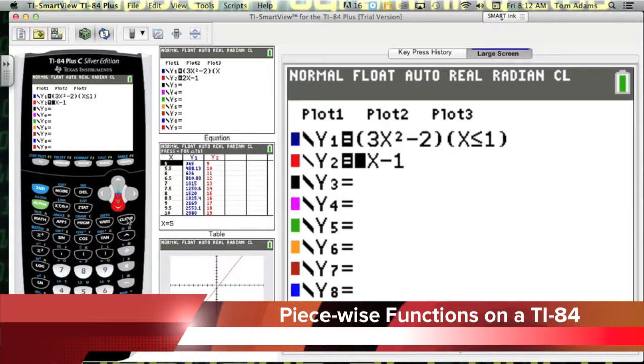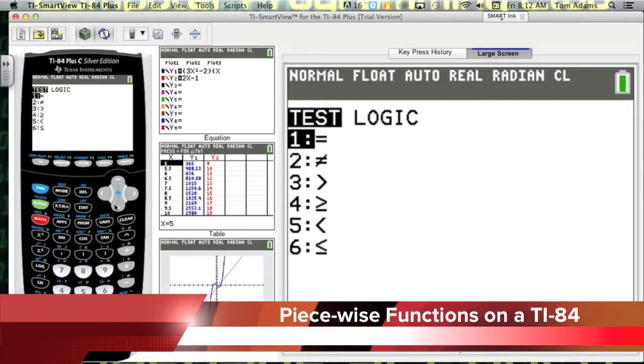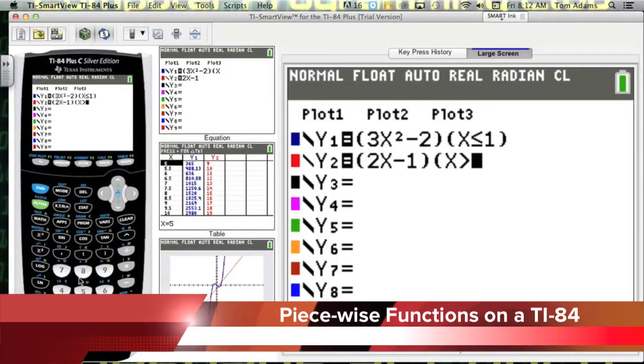For our next function, we're going to do the same thing. In parentheses, put 2X minus 1. And then I'm going to put X second test. I'm going to choose the greater than symbol, which is 3, and then choose 1. And now when I graph it, I get a completely different function.